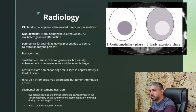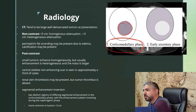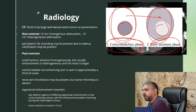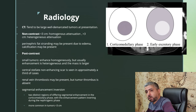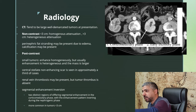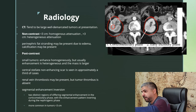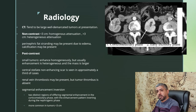Now, the segmental enhancement inversion sign: in the corticomedullary phase the lesion enhances more than the surrounding kidney, while in the early excretory phase the lesion enhances less than the surrounding kidney — an inversion on two different phases. This is a very useful sign, especially in small tumors, to differentiate oncocytoma from renal cell carcinoma. On this example, in the early corticomedullary phase the lesion enhances more than the surrounding kidney, and in the early excretory phase it enhances less — confirming the segmental inversion sign favoring oncocytoma.